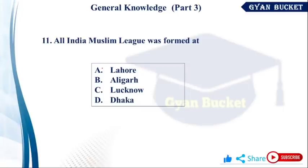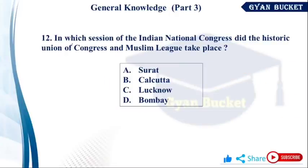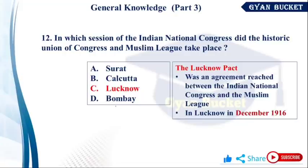All India Muslim League was formed. In which session of the Indian National Congress did the historic union of Congress and Muslim League take place? The INC and Muslim League unity happened at the Lucknow session — the Lucknow Pact was formed in 1916. The Indian National Congress and Muslim League came to an agreement. So this session is the 1916 session, INC and Muslim League.